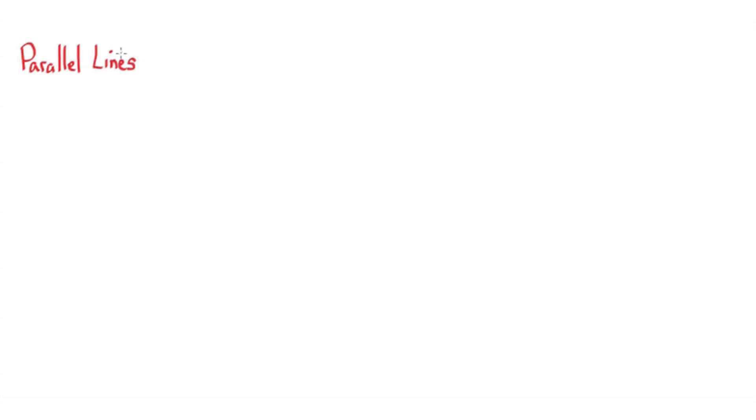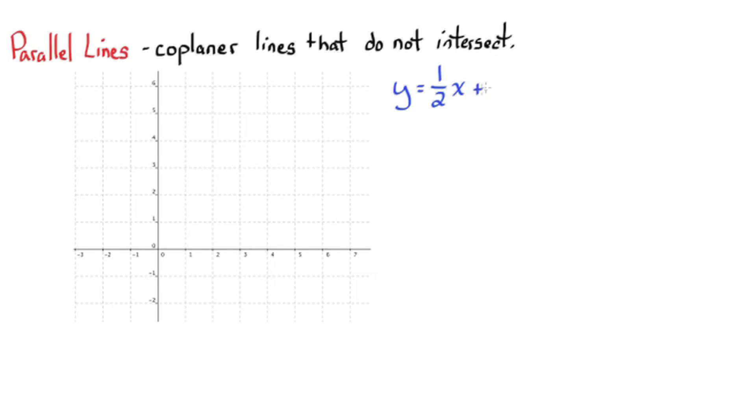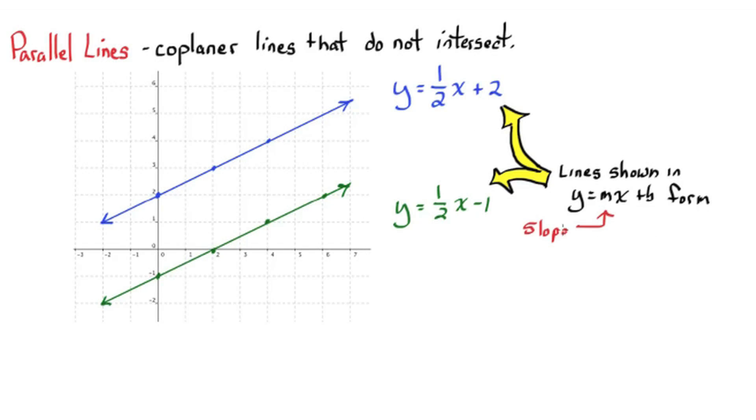Okay, parallel lines. Coplanar lines that do not intersect. Y equals one half X plus two. Y equals one half X minus one. I'll graph these lines here, one in blue and one in green. Lines shown in Y equals MX plus B form, therefore they're really easy to graph. These two lines are graphed on the coordinate plane.